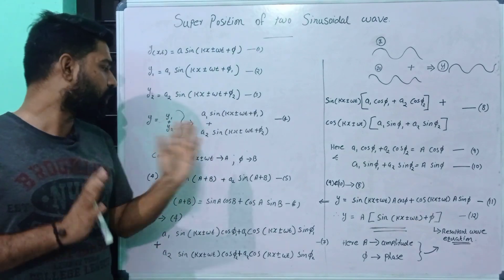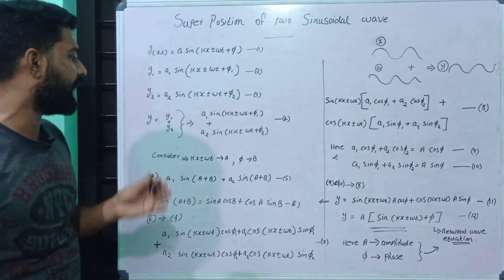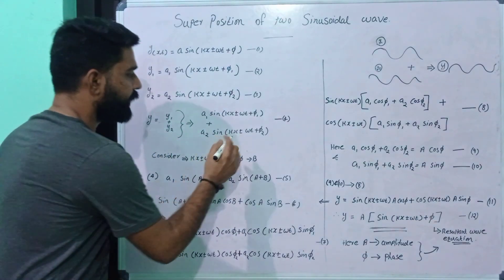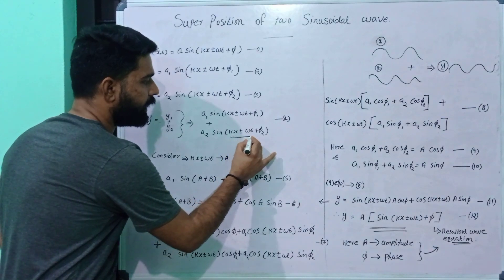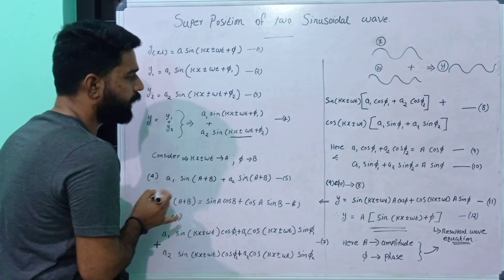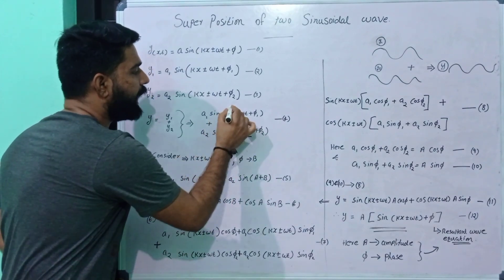So we look at what we have here. The value kx ± ωt appears in both equations. We identify this common term in the two equations.